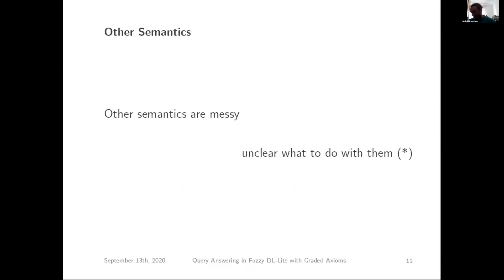This is for the Gödel semantics. I didn't speak about the other semantics. For those of you that know about fuzzy logic, there are product semantics and Lukasiewicz semantics. They are messy. It's unclear what to do with them. In the paper we have a few results, not much, but we're still trying to solve these issues. If you're more interested, just read the paper. You can ask me questions in the Slack channel or send them. That's it. Thank you.